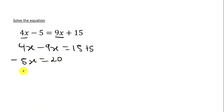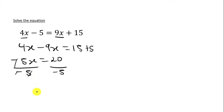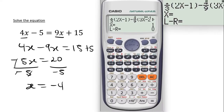We are solving for x, so we are going to divide both sides by negative 5. We divide here by negative 5 and here by negative 5. The negative 5 will cancel out and we are going to be left with x is equal to negative 4. That is the answer when you solve this manually. So now you want to learn how to use the calculator to solve this one too.